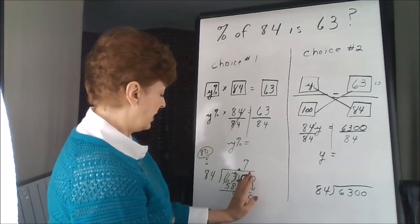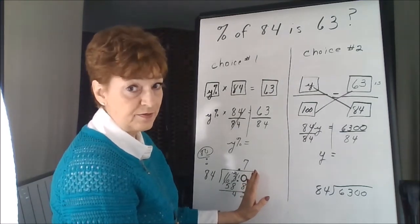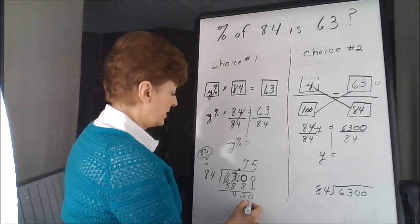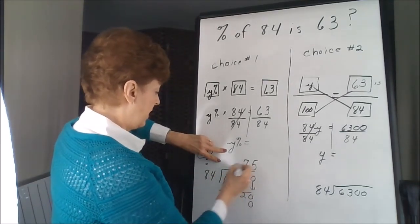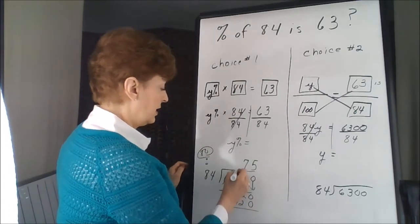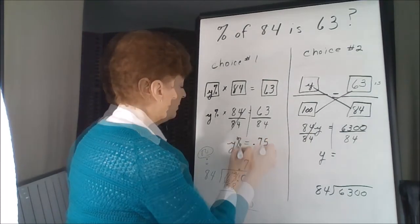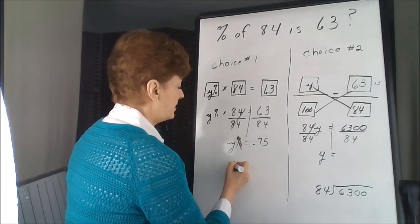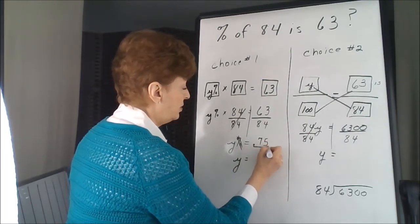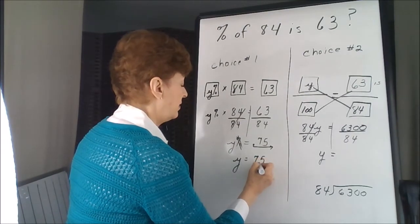8 divides into 42. 8 times 5 is 40, let's try that. 5 times 4 is 20, 5 times 8 is 40, 42, there we go, that's perfect. So it's 0.75. I can eliminate my percent sign by moving this decimal point two places to the right. 75, 75 percent.